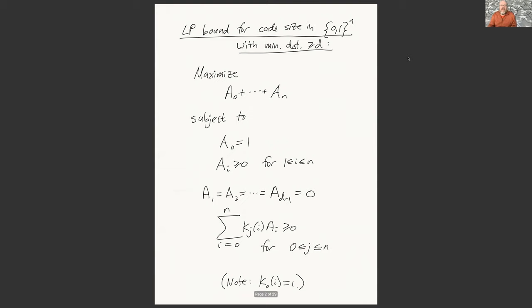What is the linear programming bound for binary codes with a given minimal distance? Remember from last time that we write it in terms of the distance distribution a_i. We're trying to maximize the total number of points — the sum of all the a_i's — subject to a_0 equal to one, a_i greater than or equal to zero, all counts before the minimum distance vanishing, and also the Delsarte inequalities. This does not necessarily give the best possible code, but it gives some bound for how good a code can possibly be, because every code satisfies these inequalities.